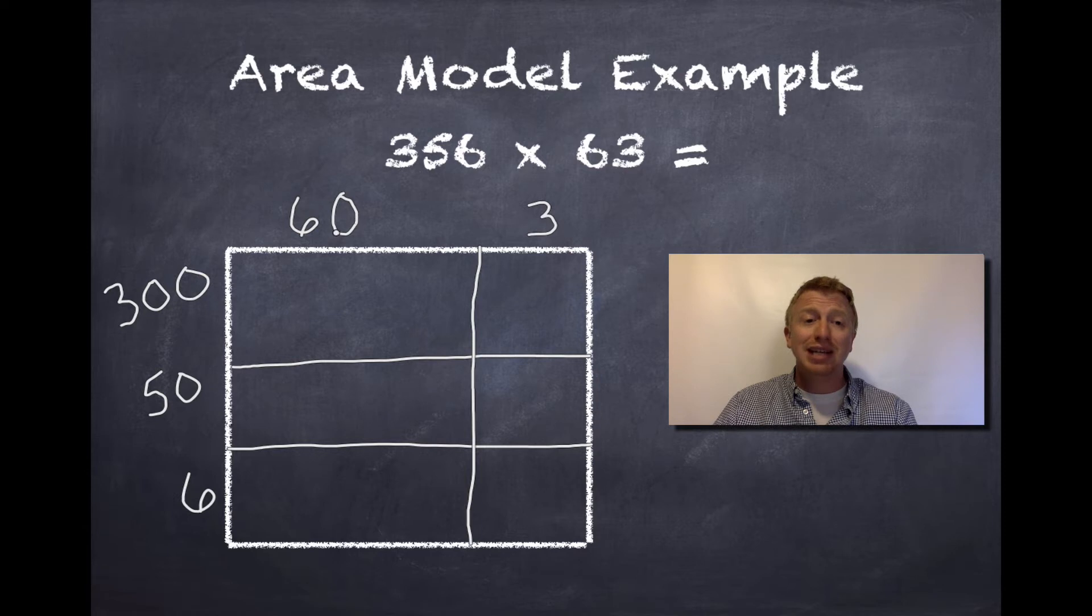First, I'm going to multiply 60 times 300, then 60 times 50, and finally, 60 times 6. Let's start.